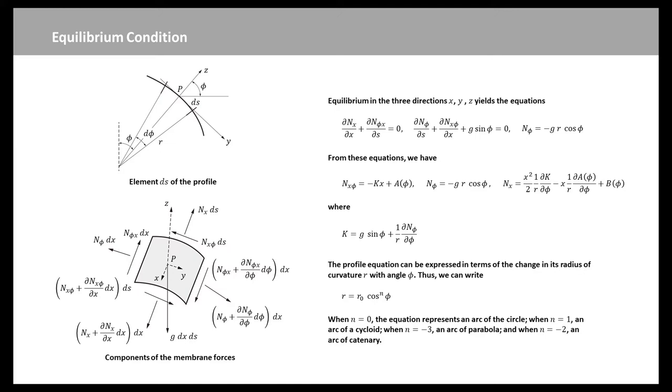When n equals 0, the equation represents an arc of the circle. When n equals 1, an arc of cycloid. When n equals negative 3, an arc of a parabola. When n equals negative 2, an arc of a catenary.